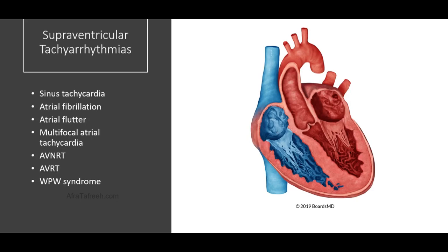In this series, we're focusing on supraventricular tachyarrhythmias, meaning tachyarrhythmias or fast rhythms which originate above the ventricle, hence supraventricular. This is in contrast to, for example, ventricular tachycardias, which may originate from a foci within the ventricle.